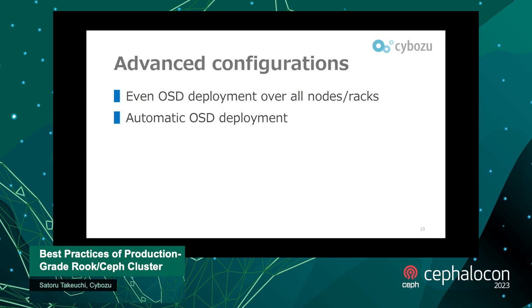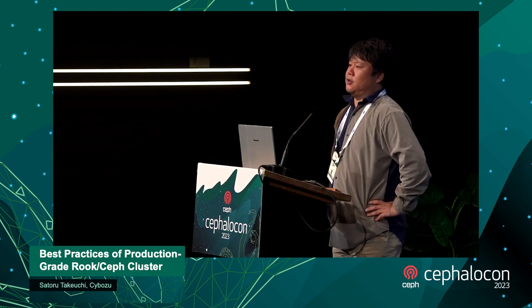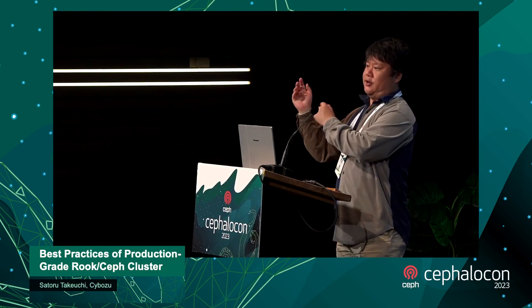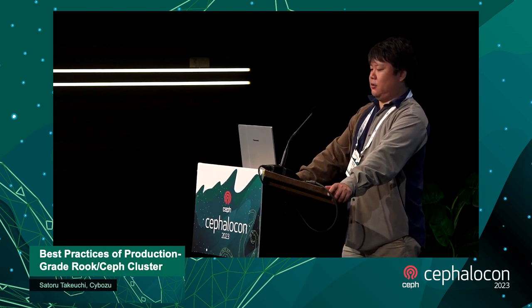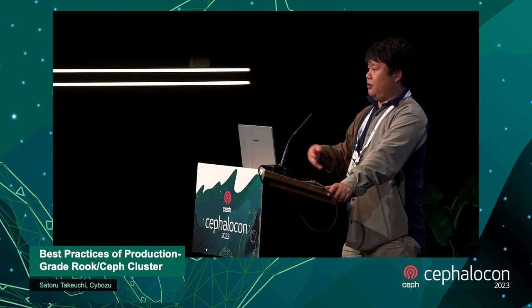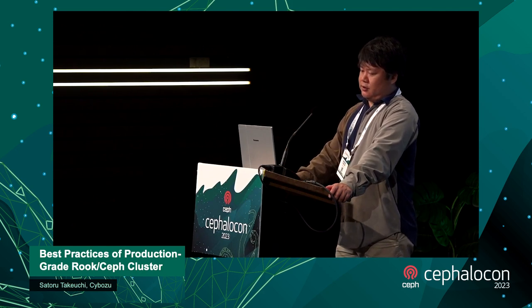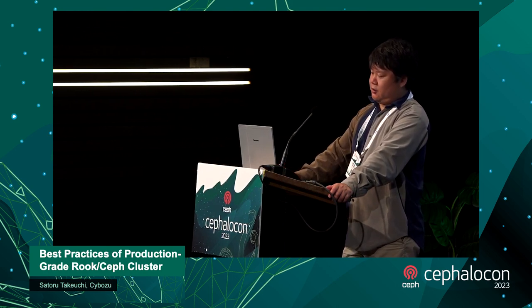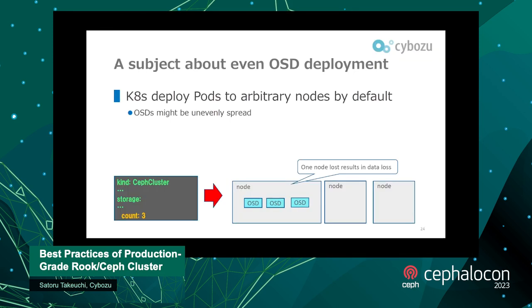Rook can automatically increase OSDs when you increment the count field. To accomplish this, we need to configure two parameters. The first is even OSD deployment over all nodes and all racks. Kubernetes deploys pods to arbitrary nodes by default, so OSD pods might be deployed unevenly. For example, in a Ceph cluster with three OSDs and three nodes, our expectation is one OSD per node, but Kubernetes might create all three OSDs on just one node — and if that node breaks, all data disappears.